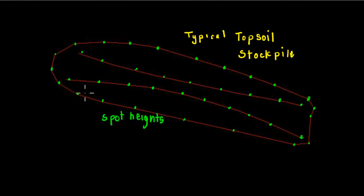These here are tops of banks, so we've got a batter running in these two areas here and we can drive across the top of the stockpile. So that's your fairly typical topsoil stockpile.